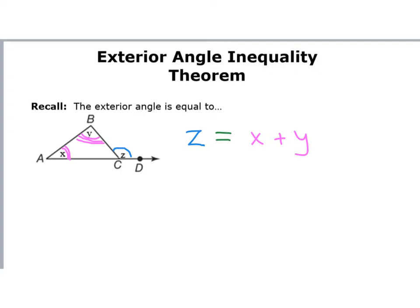So because of that, since I have to add to X to get to Z and I have to add to Y to get to Z, I know that Z in relation to X and Z in relation to Y — since it takes X plus Y to make Z — Z has to be a bigger value than X, and Z has to be a bigger value than Y. Your exterior angle will always be bigger or greater than your remote interior angles.